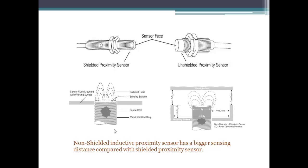In contrast, non-shielded inductive proximity sensors have an exposed coil. For this reason, the non-shielded model can induce a larger electromagnetic pattern and has a bigger rated sensing range compared to the shielded inductive proximity sensor.